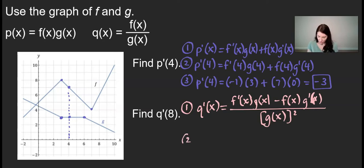For step two, I am going to plug in our input value of 8. So to find q prime of 8, I'm going to substitute 8 in for every x value.